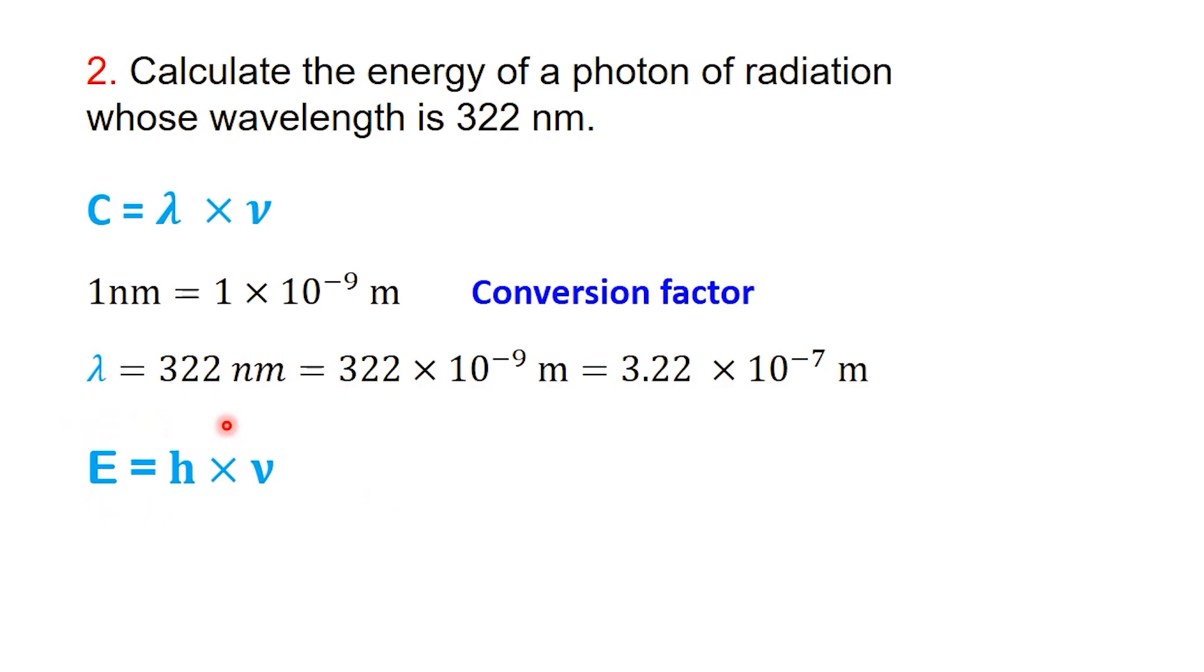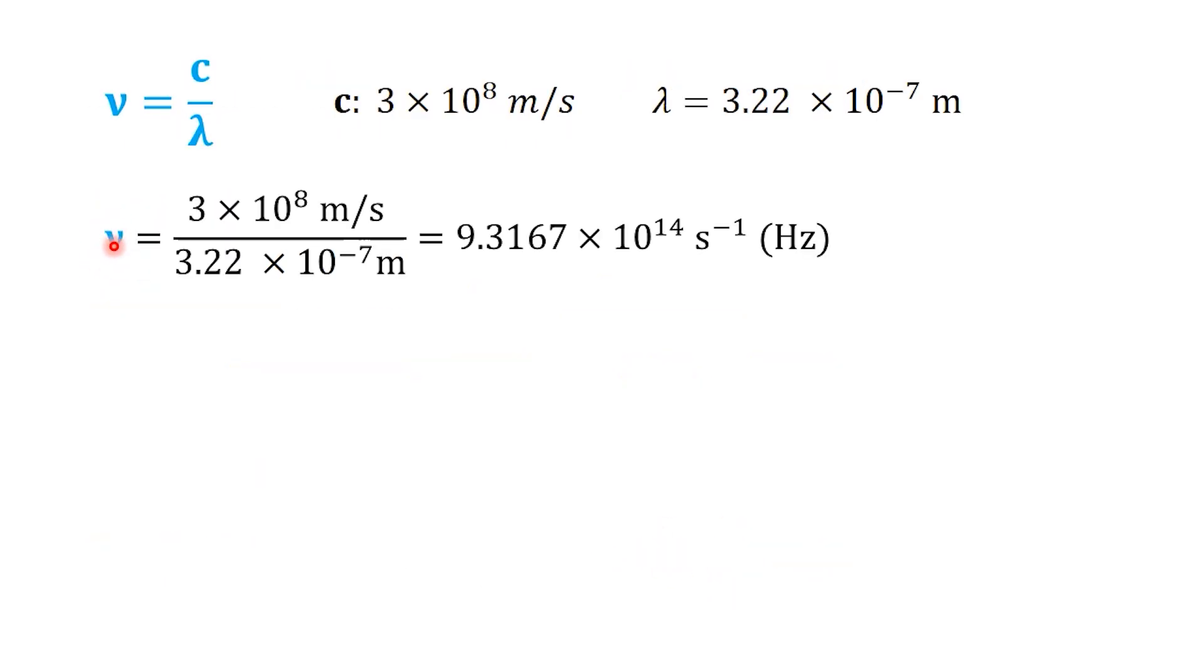We still use the same formula for energy, E equals H times nu, but here we don't know nu yet. So first, we find nu using the speed of light equation, nu equals C divided by lambda. We'll take C as exactly 3 times 10 to the 8 meters per second. So, nu equals 3 times 10 to the 8 divided by 3.22 times 10 to the minus 7. That comes out to about 9.31677 times 10 to the 14 per second.